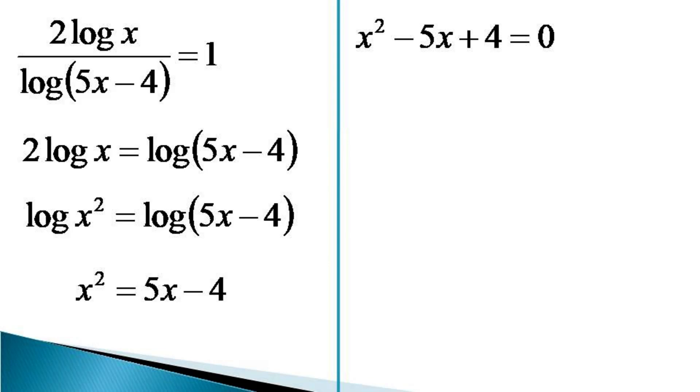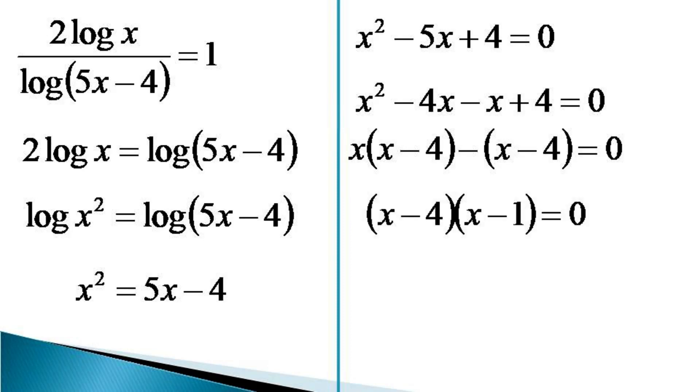This can be factorized by representing it as x squared minus 4x minus x plus 4 equals 0. We take x common from the first two terms and a negative sign common from the last two terms, which makes the equation x times (x minus 4) minus (x minus 4) equals 0. Taking x minus 4 common, we get (x minus 4) times (x minus 1) equals 0.